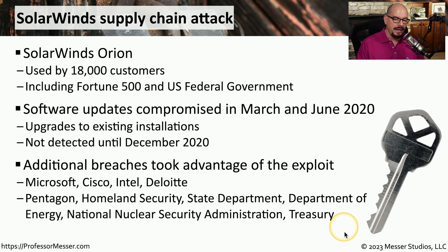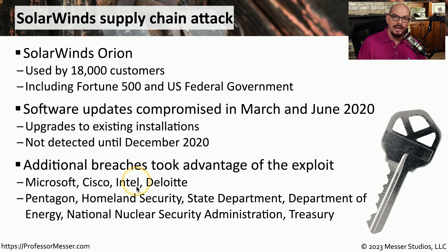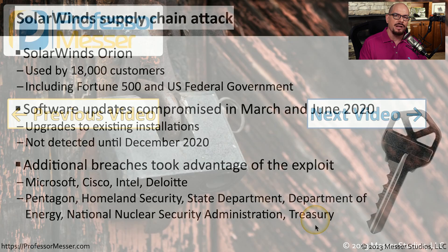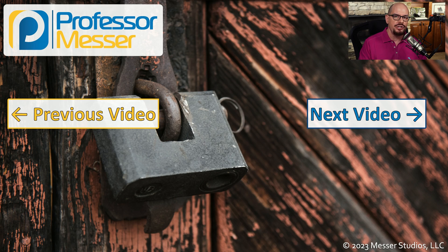Once this malicious code was distributed automatically as part of the update, attackers gained access to many different companies and organizations, including large organizations like Microsoft, Cisco, and Intel, and state organizations such as the Pentagon, Homeland Security, and the Department of the Treasury. These are very large networks with huge infrastructures and very sensitive data, and the attackers were able to gain access very easily by taking advantage of this supply chain exploit.